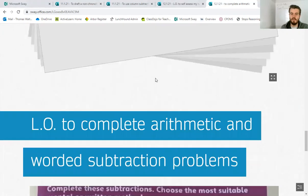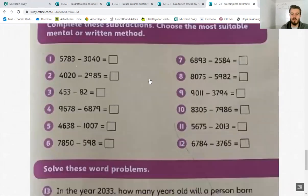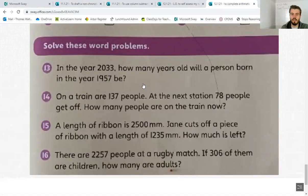All right, so well done. You've got all those three, and your task for today is easy. You've got 12 arithmetic questions to do first, all using your columns, please. And then you've got four worded questions to have a go at.